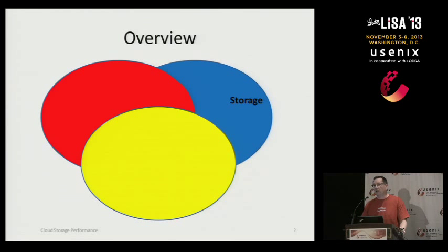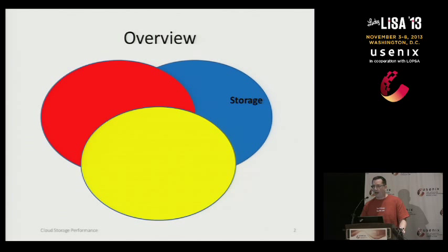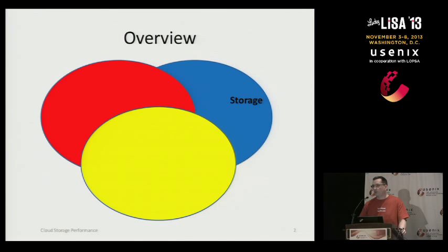It's the intersection of three different disciplines or areas of knowledge. The red should have a label that says performance, the blue is storage, and the yellow is cloud. I'm going to add these one by one. I'll start off by talking about some generic performance measurement thoughts, then add storage to talk specifically about storage performance measurement, and finally add the extra dimension of cloud, which just makes everything a little bit messier.